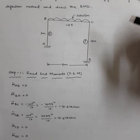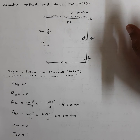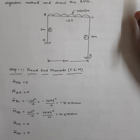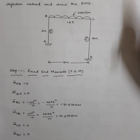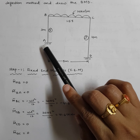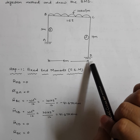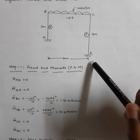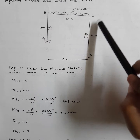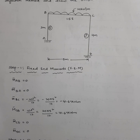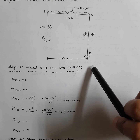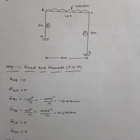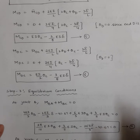Since this is a sway frame, we also apply a horizontal equilibrium condition: sigma H = 0. The horizontal reactions are HA at support A and HD at support D — there are no externally applied horizontal forces. So HA + HD = 0 is our third equilibrium condition. The first two are joint equilibrium conditions; the third is the sway condition.